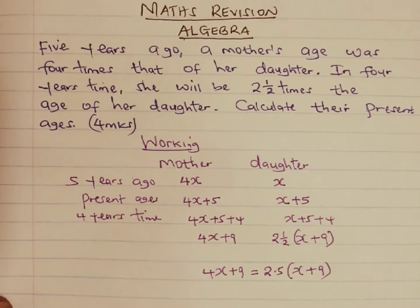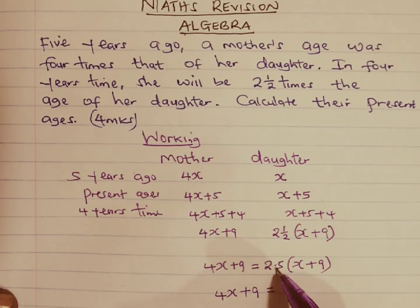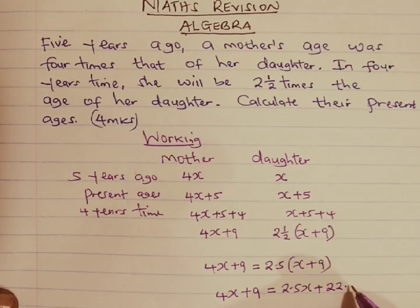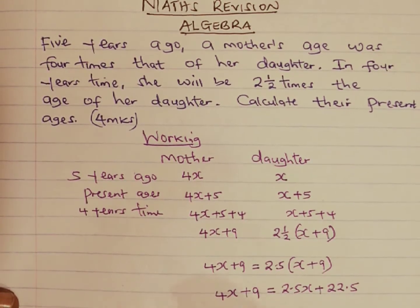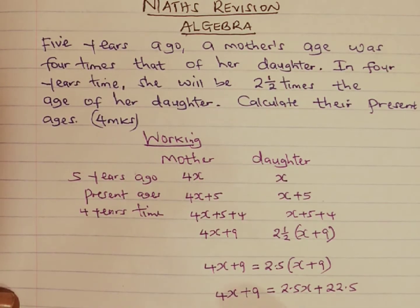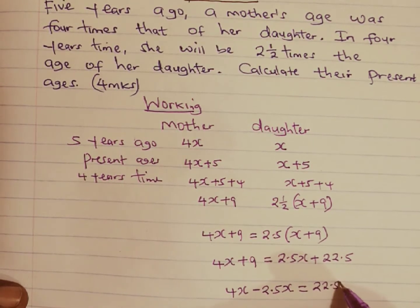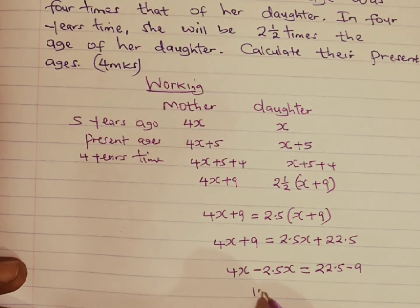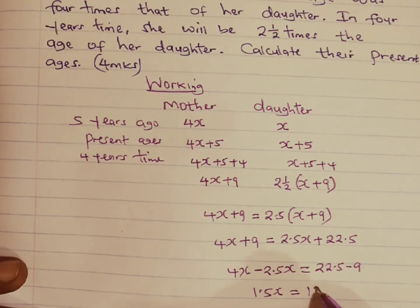We can now work out the value of X. We have 4X plus nine equal to two point five times X plus nine, which expands to two point five X plus twenty-two point five. Collecting like terms together, 4X minus two point five X gives us one point five X, and this must be equal to twenty-two point five minus nine, which gives us thirteen point five.